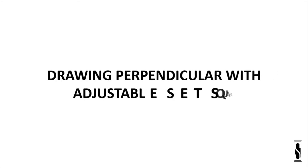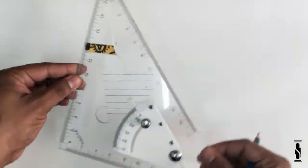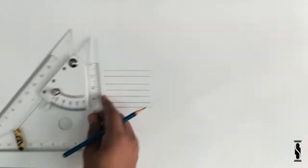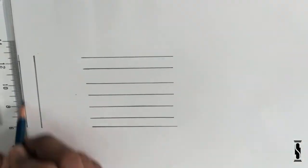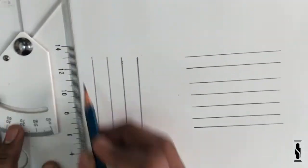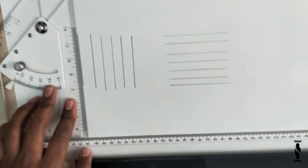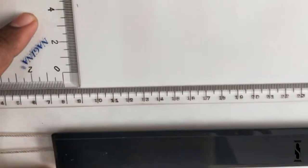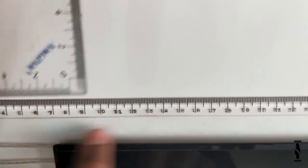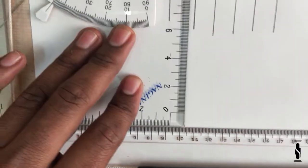Now, it's time to draw perpendicular lines with adjustable set square. Put one edge of the set square on the edge of parallel bar and start drawing perpendicular lines by sliding set square on the edge of the parallel bar. Always keep the set square in contact with parallel motion bar for accurate drawing.